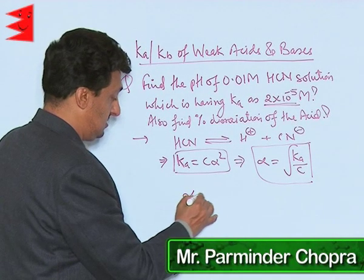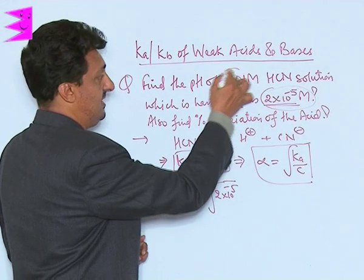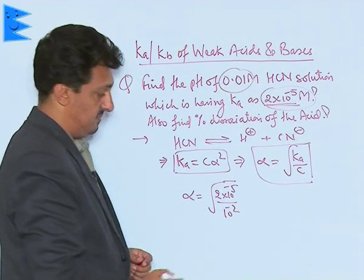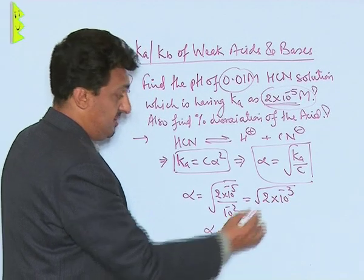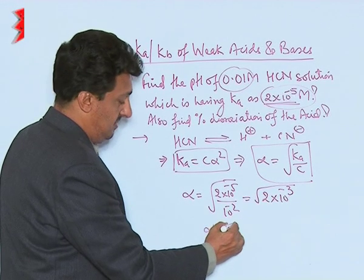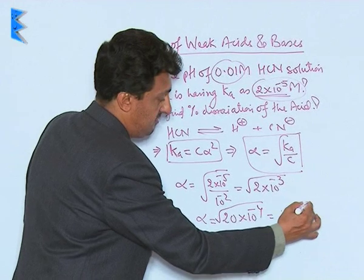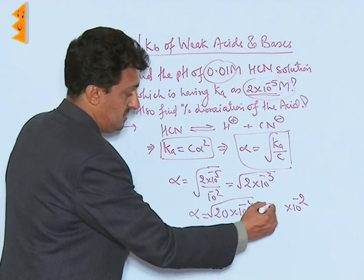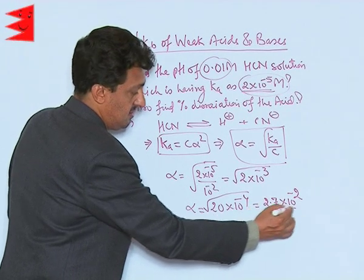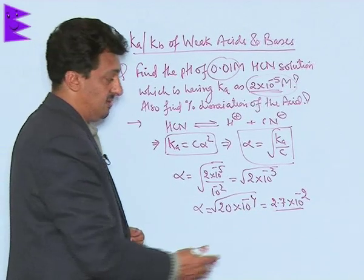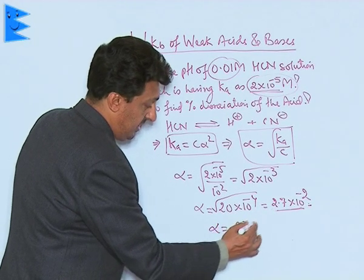The degree of dissociation alpha = √(Ka / C). Ka is 2 × 10⁻⁵ and C is 10⁻². This gives 2 × 10⁻³, which we rewrite as 20 × 10⁻⁴. The square root of 20 is approximately 2.7, so alpha ≈ 2.7 × 10⁻², which in terms of percentage is approximately 2.7%.